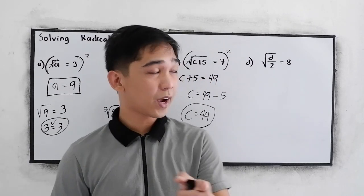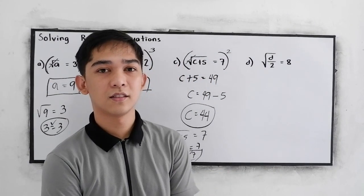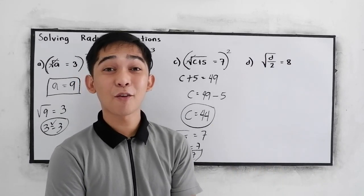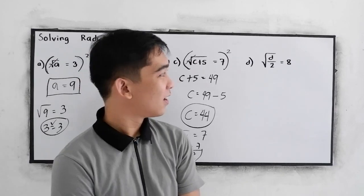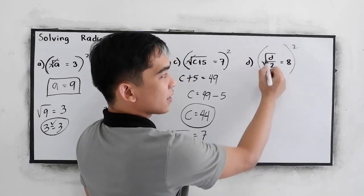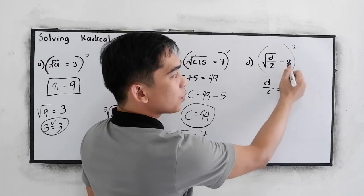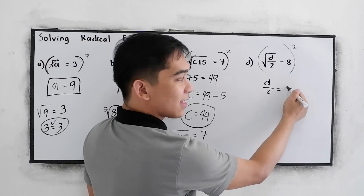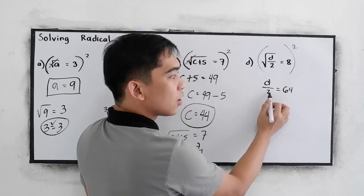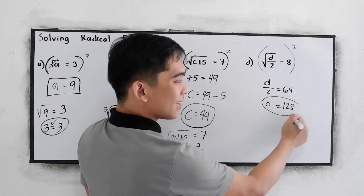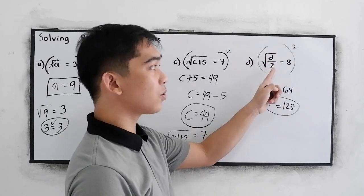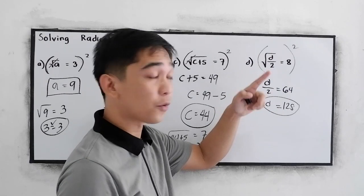Now, can you try letter D? If you want to try letter D, pause the video, then after answering, resume watching to check your answers. To remove the square root, we square, giving us D over 2 is equal to 8 squared, that is 64. Cross-multiplying, D is equal to 2 times 64, which is 128. Checking: 128 divided by 2 is 64, and the square root of 64 is 8.